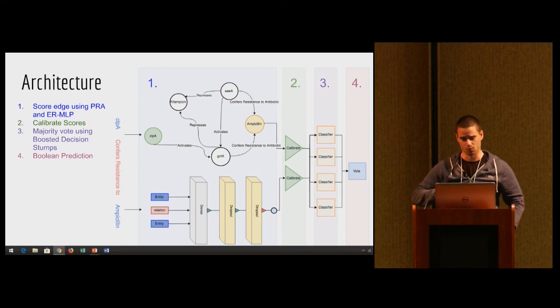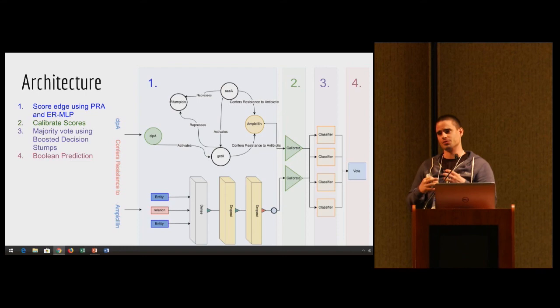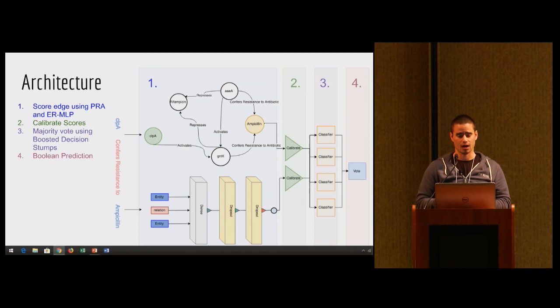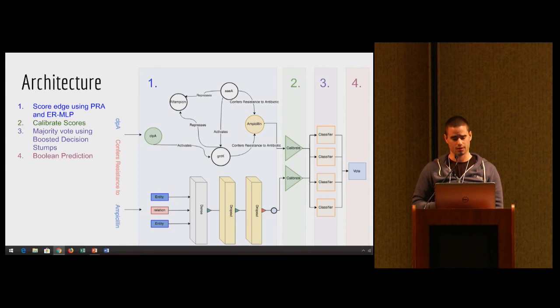The architecture, or the high-level overview of how we're going to infer over this knowledge graph, is we're taking two disparate approaches and then combining the approaches to have this fused model to exploit the powers of the two disparate approaches. It's separated into four stages. In the first stage, we take a candidate edge and run it through two trained models. One is called the path ranking algorithm, which is an observable graph feature model.